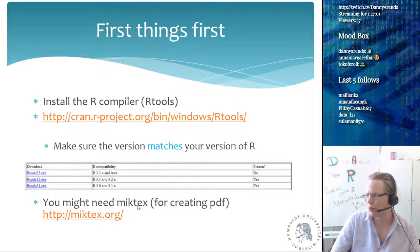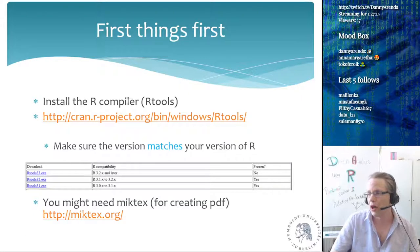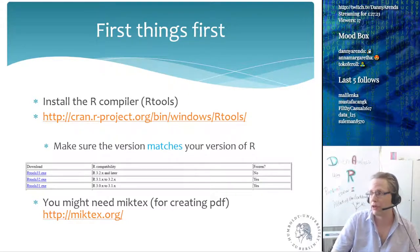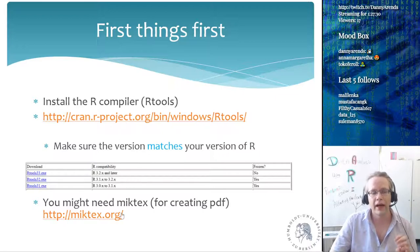MiKTeX is about 1.2 gigabytes to download and around 2 gigabytes on your hard drive once extracted. You can also install MiKTeX on Linux since it is not installed by default there either. However, you do not need Rtools when using Linux or Mac OS X. On Windows you need both the R compiler and MiKTeX to ensure documentation is generated correctly.